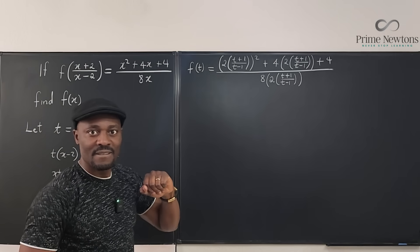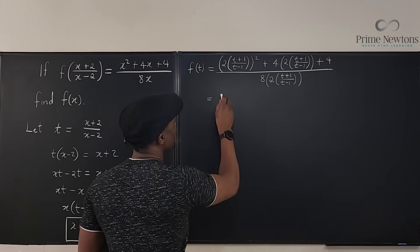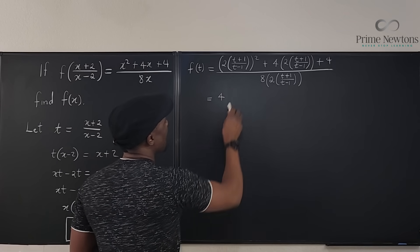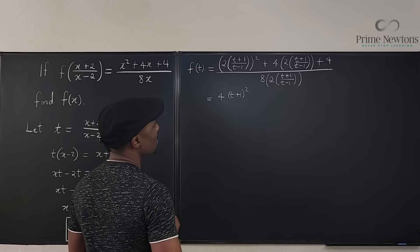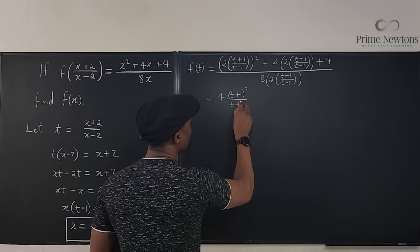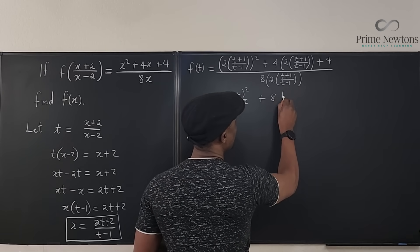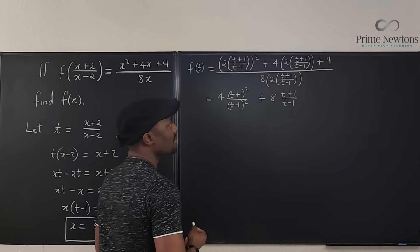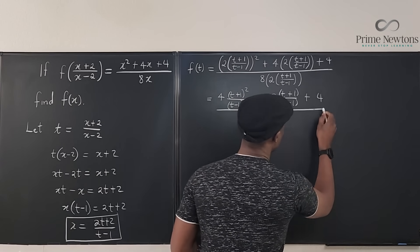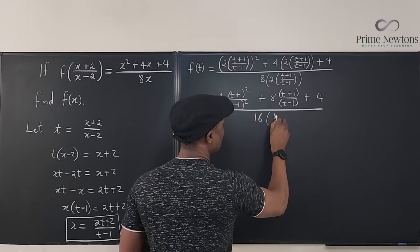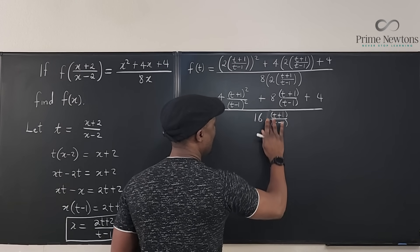So what do we get here? Nothing special, nothing strange. Just do pure algebra. Let's simplify and see what we get. If we square everything here, we're going to end up with 2 squared is 4, and this is going to be t plus 1 squared over t minus 1 squared. Plus 4 times 2 is 8, so I'm going to write 8 here and write t plus 1 over t minus 1. Plus 4. And everything here is divided by 16 times t plus 1 over t minus 1.